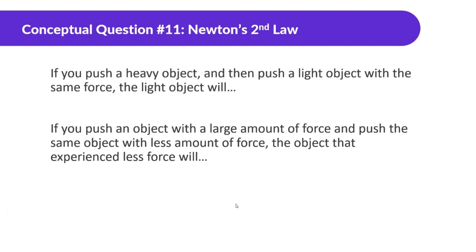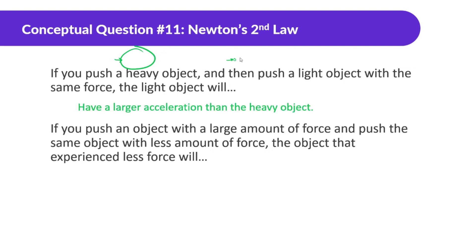If you push a heavy object and then push a light object with the same force, the light object will have a larger acceleration than the heavy object. Looking at the formula, if the mass is very small, that means the acceleration is going to be a lot bigger. Conversely, if the mass is very big and you apply the same force, the acceleration will be a lot smaller.